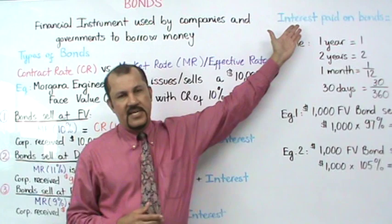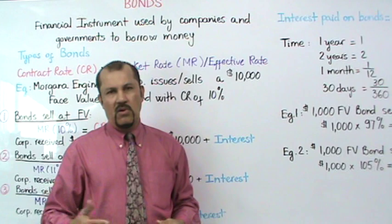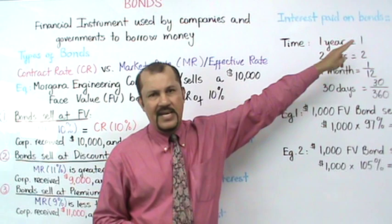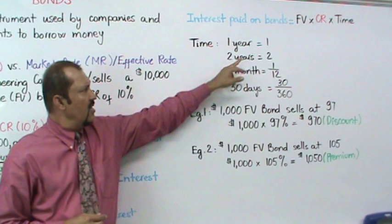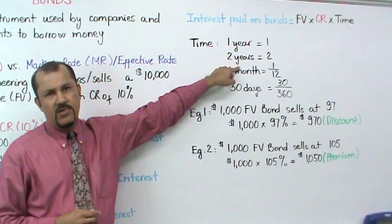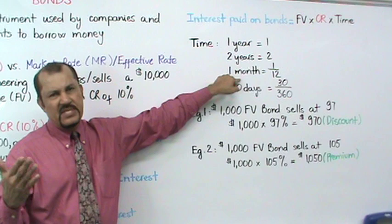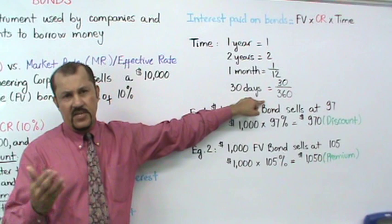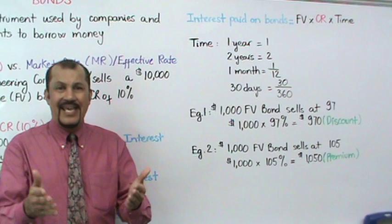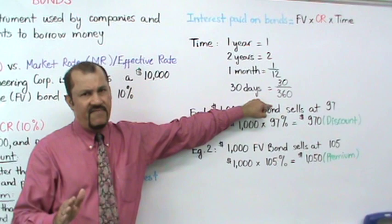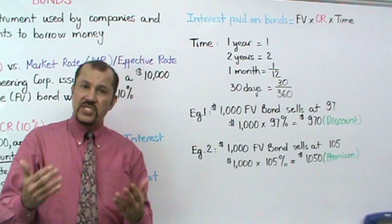Now let's look at how we calculate the interest that Morgana Corporation will pay out on the bonds. The formula is: face value times contract rate times time. The time number varies depending on the period. If calculating interest for annual payments, use 1. For semi-annual, use 2. For one month, use 1/12; for two months, use 2/12, etc. If the frequency is expressed in days — like 30 days — use 30/360, not 365 but 360, which is considered the banking year. For 60 days, use 60/360, and so on.